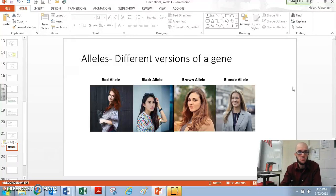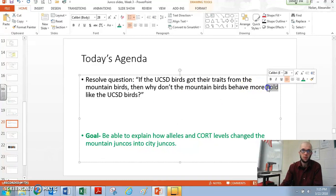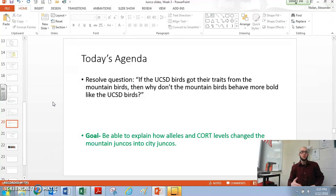If we think about this in terms of our juncos, what are the alleles we're looking at? Well, we're looking at bold alleles versus not bold alleles. We know that the mountain birds are not bold and the UCSD birds are. That means there must be a difference in their alleles, which we have seen in previous videos. They don't learn this behavior. It's inherited.